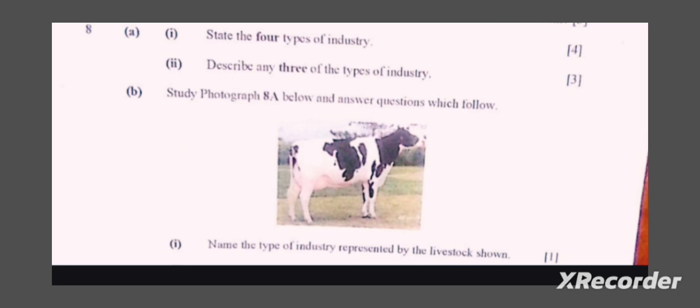Quaternary industry is a knowledge-based industry that deals with research and development. For example, IT — information technology. It involves research and advancement of technology.